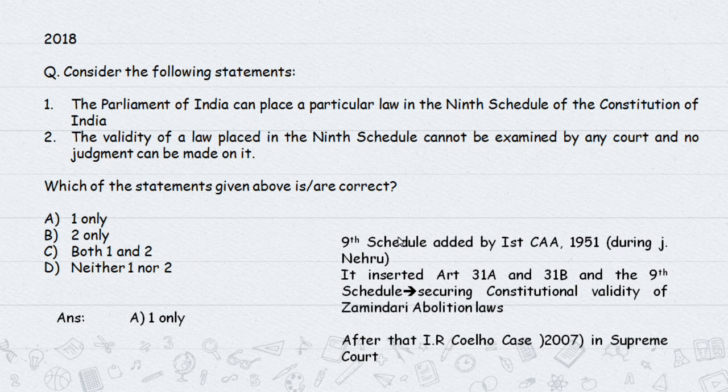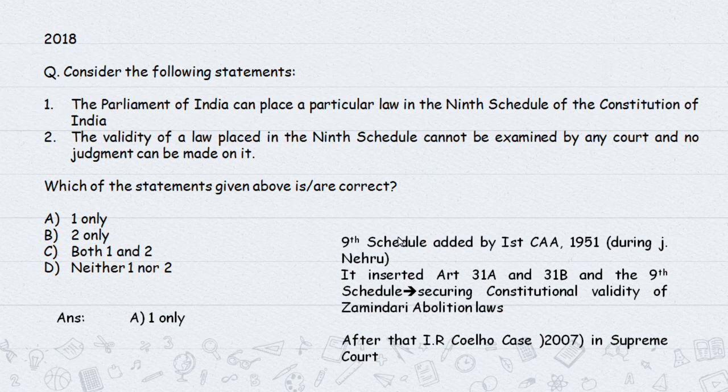In 2007, the Supreme Court in the I.R. Coelho case ruled that laws added to the Ninth Schedule after the 1973 Keshavananda Bharati judgment can be struck down by the Supreme Court. There cannot be blanket immunity for all Ninth Schedule laws. This is the correct legal position.